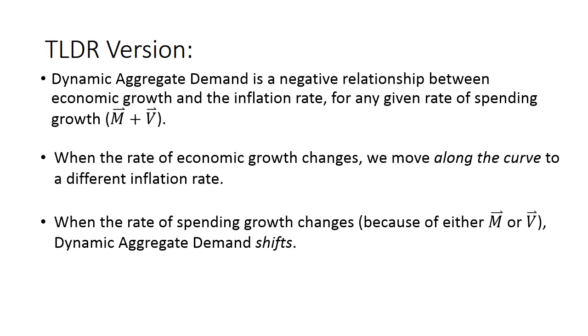When the rate of spending growth rises, the Dynamic Aggregate Demand curve shifts. If money supply or velocity grow faster, Dynamic Aggregate Demand shifts to the right. If money supply or velocity grows slower, Dynamic Aggregate Demand shifts to the left.